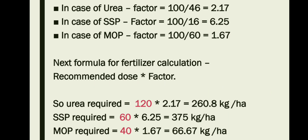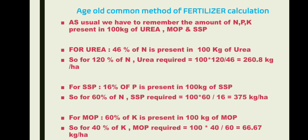This is a simple, efficient, and easy technique to calculate fertilizer doses. Whatever the fertilizer doses given, we can calculate them very easily. We just have to remember the amount of NPK present in various fertilizers. Now let me show you the old common method: for urea, 46% of nitrogen is present in 100 kg, so for 120 kg of nitrogen, urea required equals 100 × 120 divided by 46.